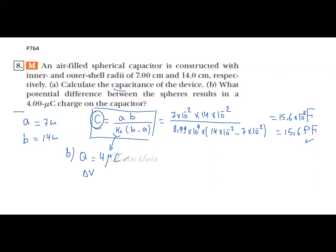In this case, you know the relation between the capacitance, q, and delta V. Here I ask you to find delta V. Delta V equals q divided by C, equals 4 times 10 to the minus 6 coulombs divided by the capacitance.